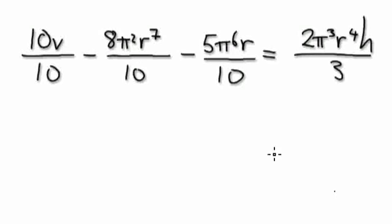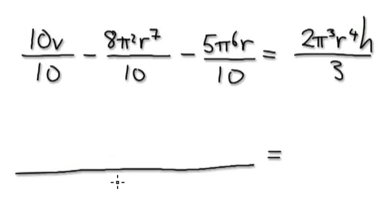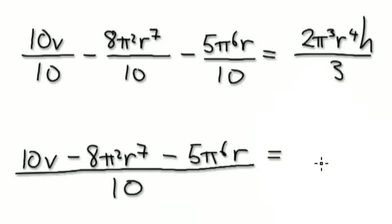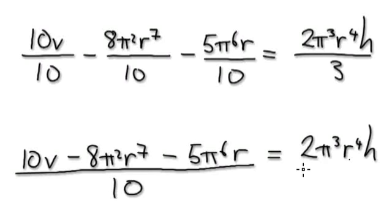So all the denominators are the same, so let's merge. It will be: 10v take away 8 pi squared r to the power of 7, take away 5 pi 6 r, all over 10. And on this side, it will be 2 pi to the power of 3, r to the power of 4, h over 3. Now you can times 3.